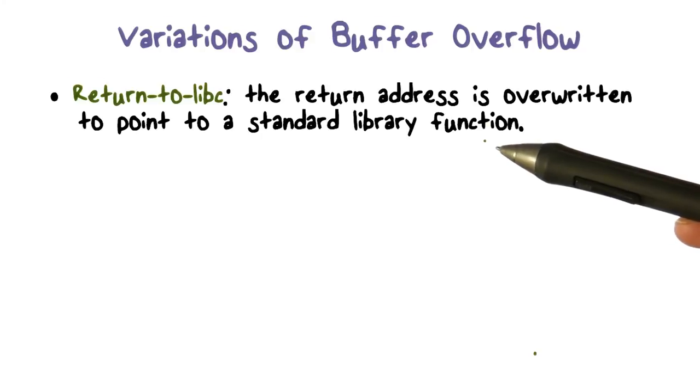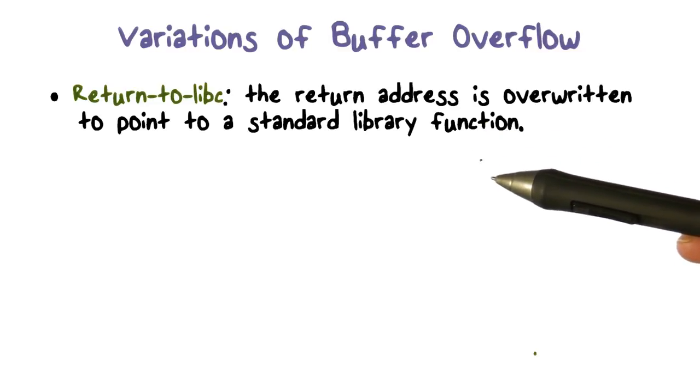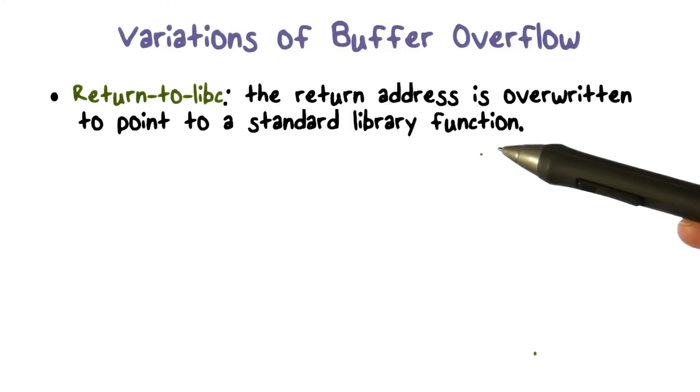The return address is going to be modified. The return address that we had on the stack is going to be modified to point to a standard library function. The assumption here is that you'll be able to figure out the address of the library function. And once you have that, that's what is going to overwrite. When you do the stack buffer overflow, you make sure that the library function address is what gets written to the return address field on the stack frame.